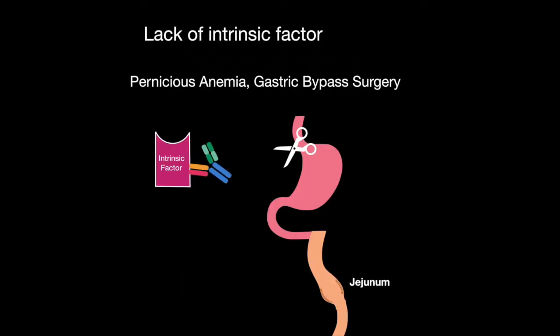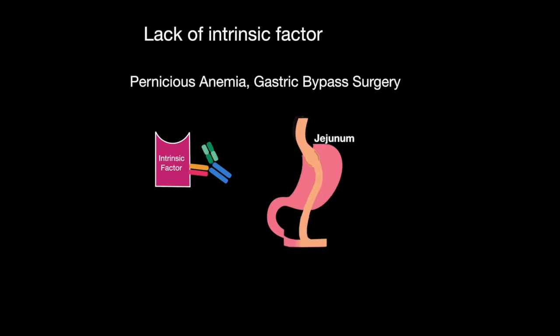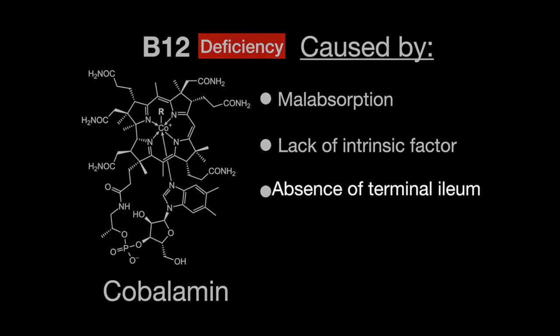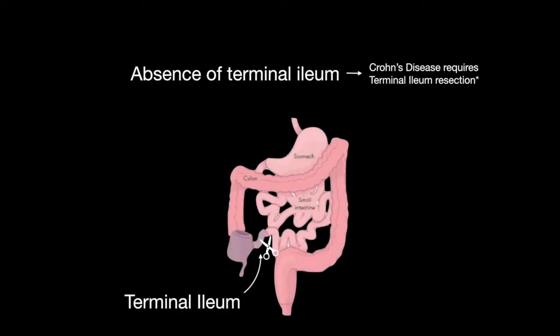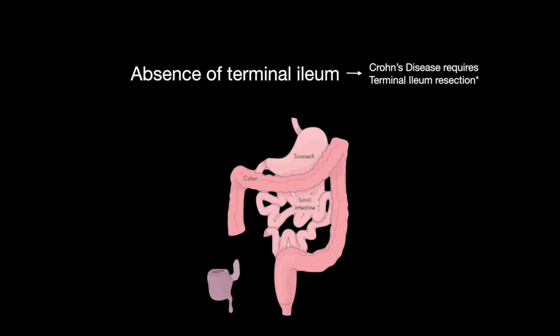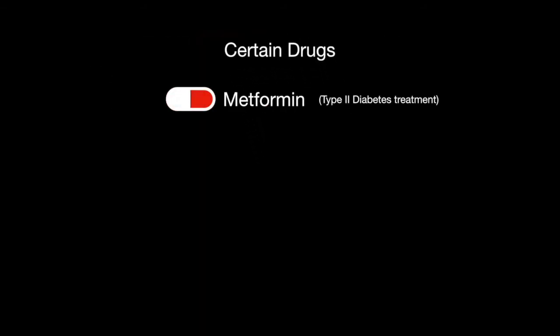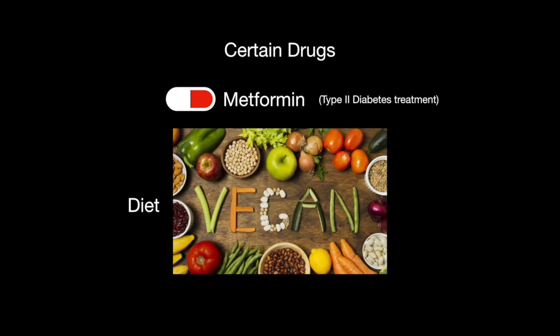A deficiency can also be caused by lack of intrinsic factor from pernicious anemia or gastric bypass surgery, an absence of the terminal ileum — the portion of the intestine that absorbs much of the B12, which may be absent due to surgical resection from Crohn's disease — certain drugs like the anti-diabetic drug metformin, or having a diet like veganism, which is low in B12.